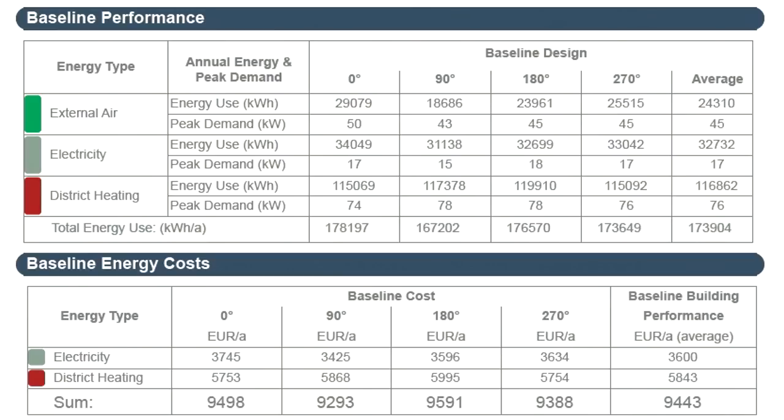According to ASHRAE, the baseline building performance data generated this way represents the average design solution better because it disregards differences in orientation caused by specific architectural solutions. EcoDesigner STAR's automatic baseline building processing functionality is also a great tool for checking whether the designed building's orientation is truly optimized, or perhaps a rotated layout would be more energy efficient. On the other hand, automatic ASHRAE 90.1 processing requires five simulations — the designed building plus four baseline building versions — versus the single unrotated baseline building method that only requires two simulations. The runtime of a performance rating analysis using the single baseline building method is therefore much shorter.